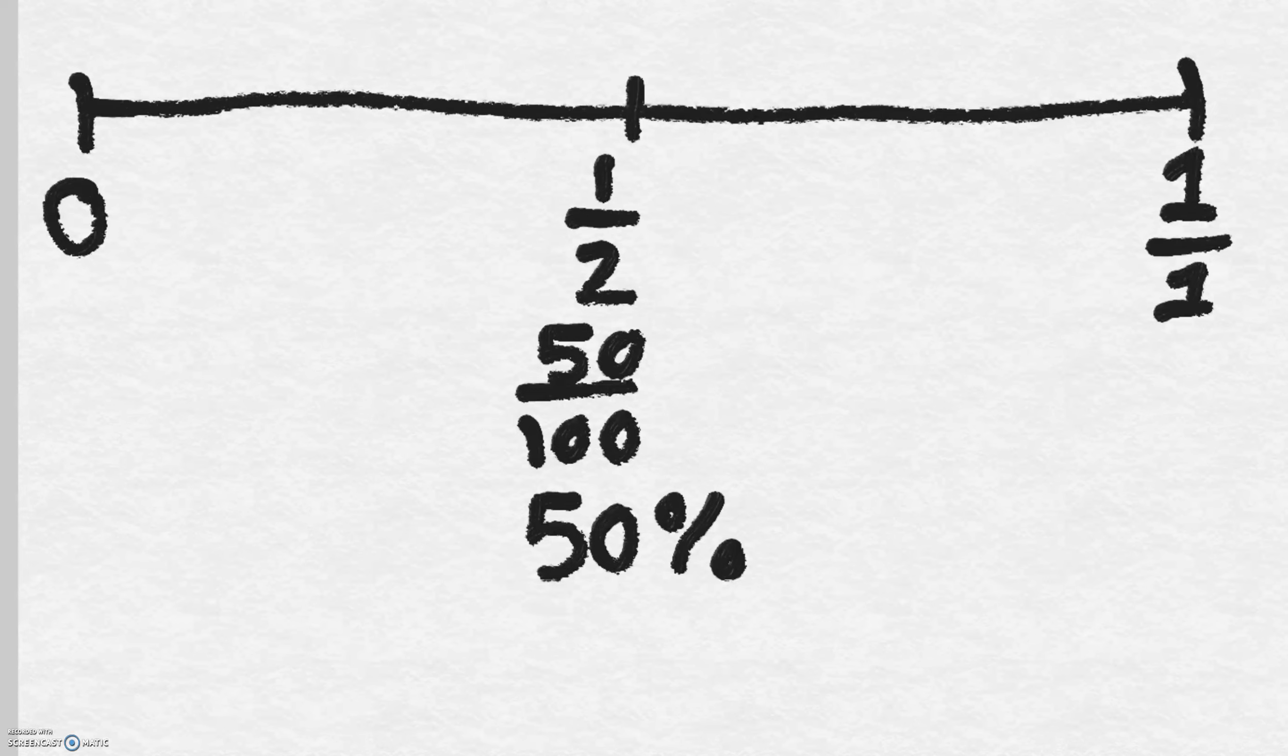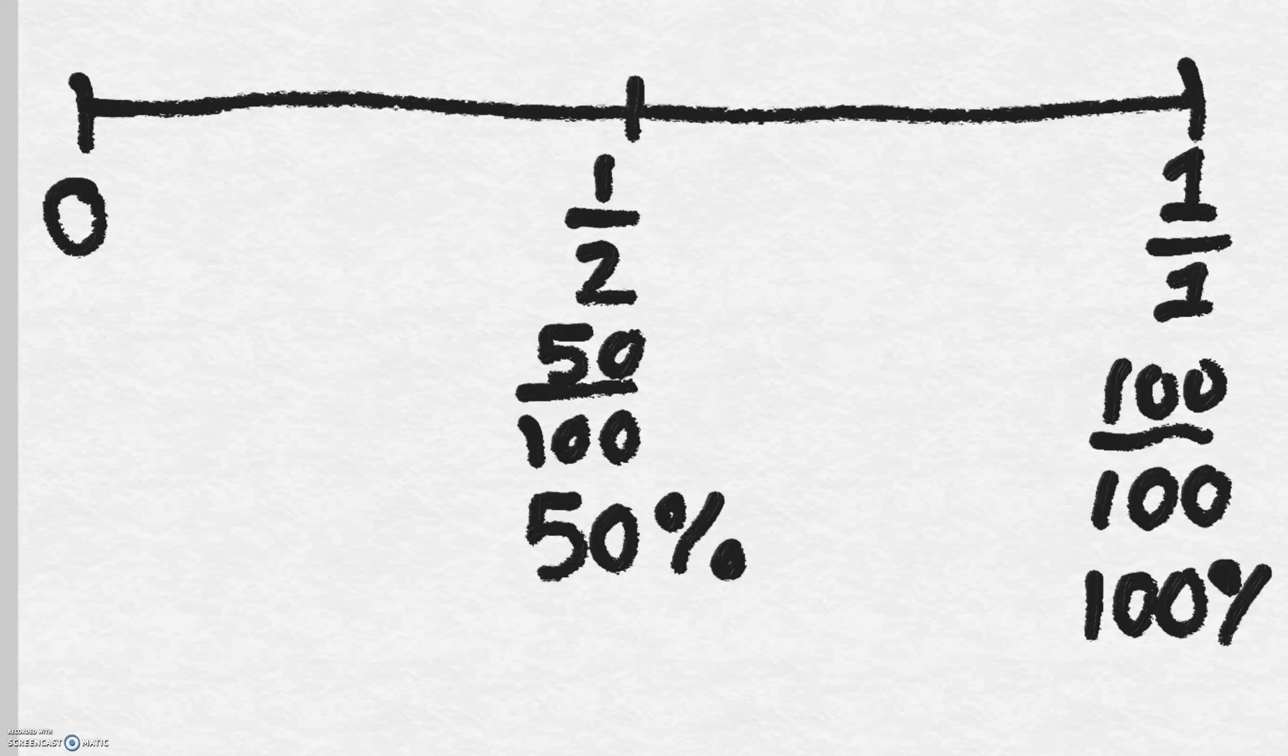So if I go over here, I've got my one whole, which is 1 over 1. I can also write that as 100 over 100, which means a whole. That whole is also written as 100 percent.